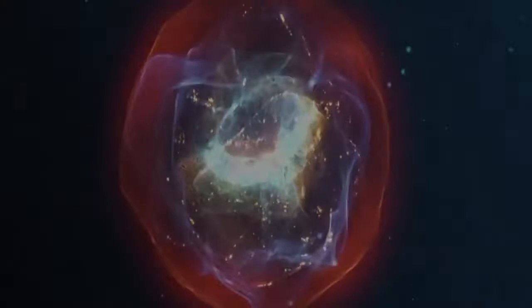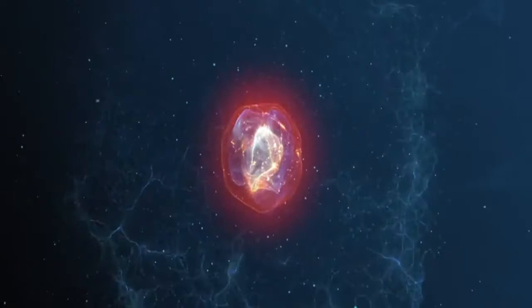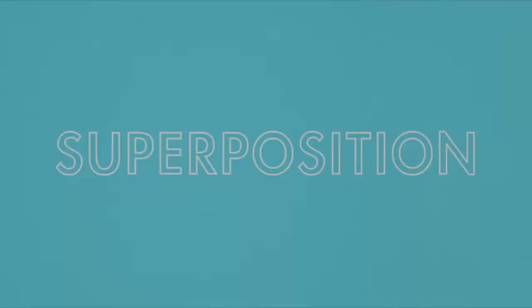Quantum mechanics is a physical theory that describes nature at very small scales, such as the atomic scale and smaller. It turns out that things of this size behave very differently from things of our size. One example of this is that of superposition. So, what is superposition?